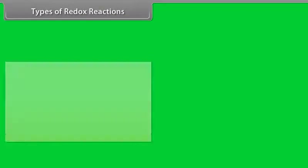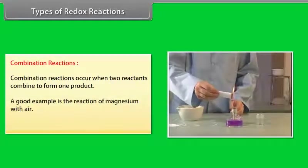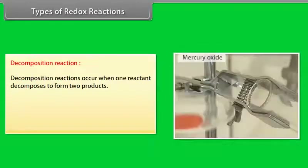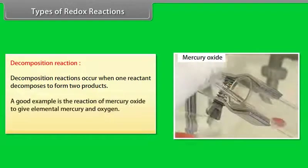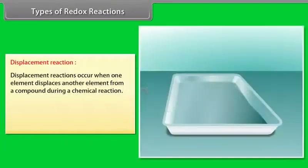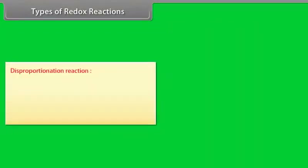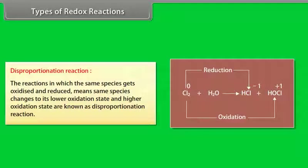Types of redox reactions: Combination reactions occur when two reactants combine to form one product — for example, the reaction of magnesium with air. Decomposition reactions occur when one reactant decomposes to form two products — for example, mercury oxide decomposing to give elemental mercury and oxygen. Displacement reactions occur when one element displaces another from a compound — for example, sodium reacting with water. Disproportionation reactions are those in which the same species is simultaneously oxidized and reduced, changing to both lower and higher oxidation states — for example, chlorine being oxidized and reduced at the same time.